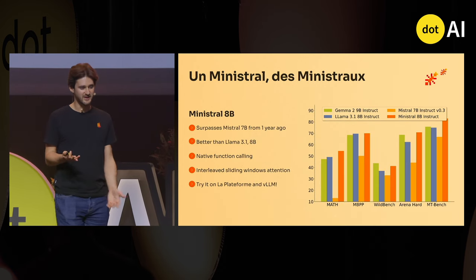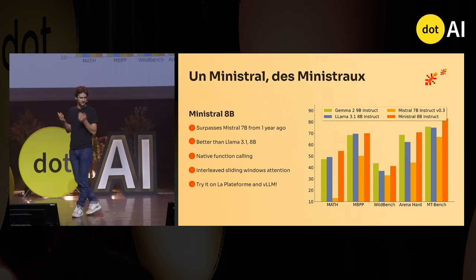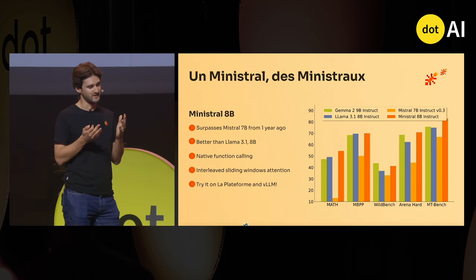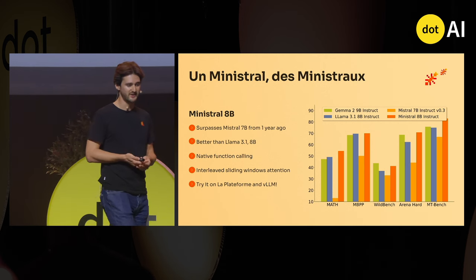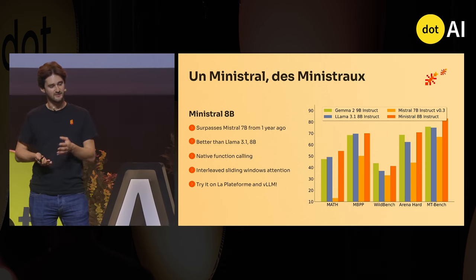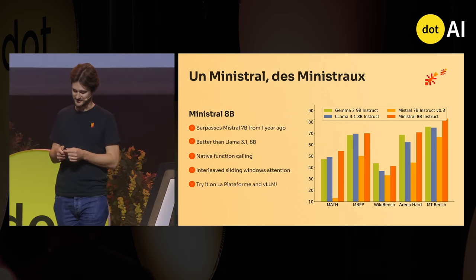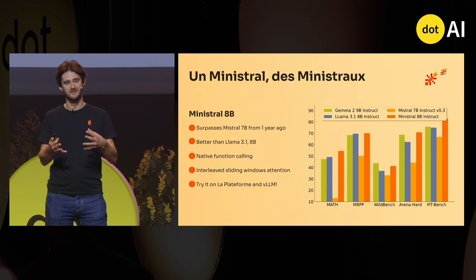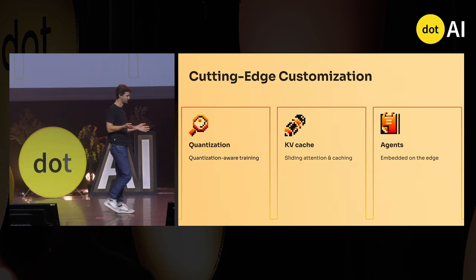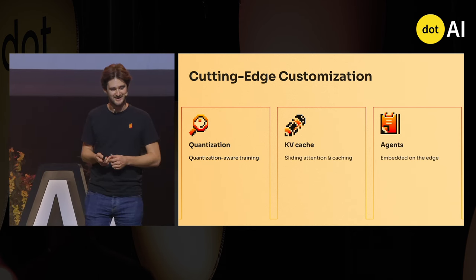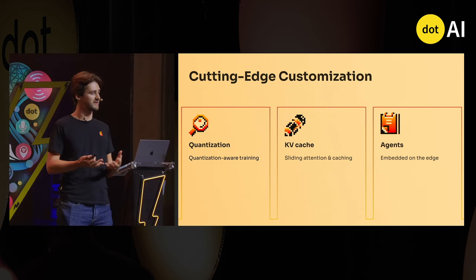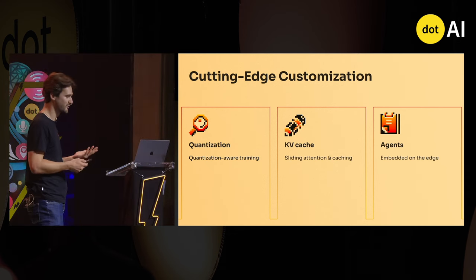The 8B follows the same pattern — just bigger — and is a super, super good model. Better than the 7B, better than LLaMA and Gemma on most instruct benchmarks in their category, with special perks to make it fit on the edge. Now that we have the Ministral models, let's see how we can embed them on edge devices, which comes with a lot of constraints.